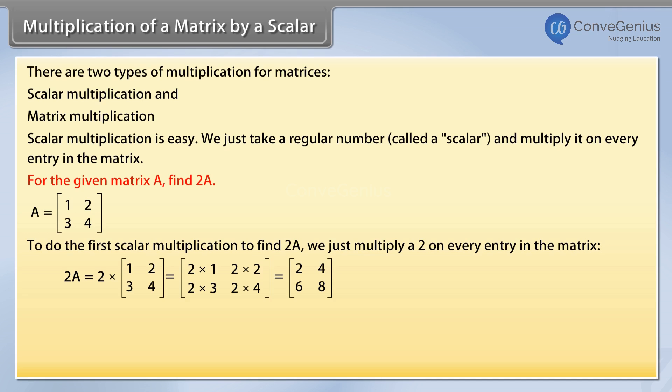first row 2, 4; second row 6, 8. So the answer is 2A equals the matrix, row-wise: first row 2, 4; second row 6, 8.